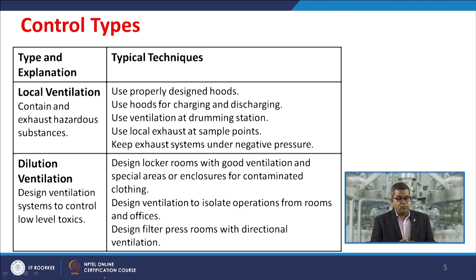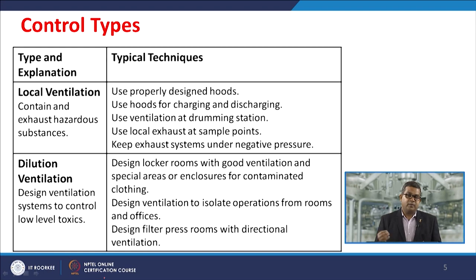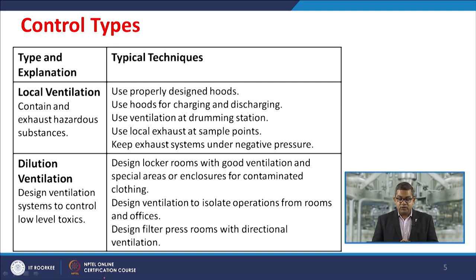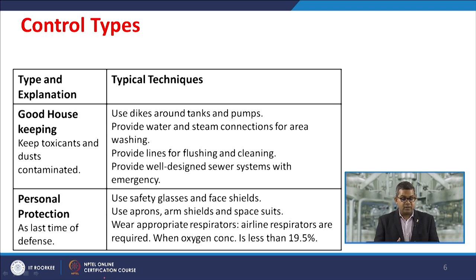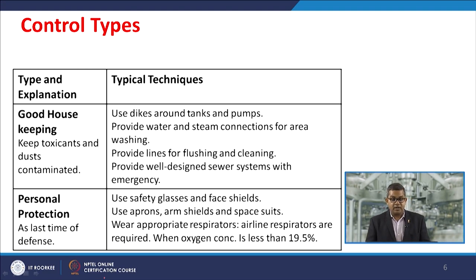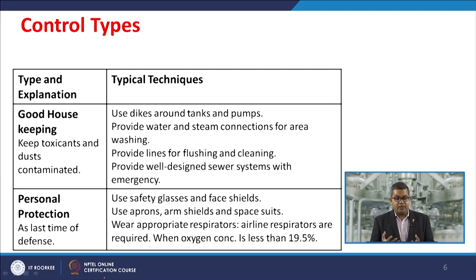Dilution ventilation designs the ventilation system to control low toxic levels using diluents — either inert gas or air. Design locker rooms with good ventilation and special enclosures for contaminated clothing. Design ventilation to isolate operations from rooms and offices, and design filter press rooms with directional ventilation. Good housekeeping keeps toxicants and dust away from the workplace. Use dykes around tanks and pumps, water and steam connections for area washing, lines for flushing and cleaning, and well-designed sewer systems with emergency provisions. Personal protection is the last line of defense.